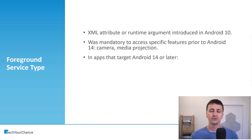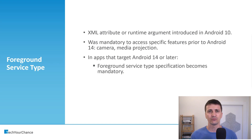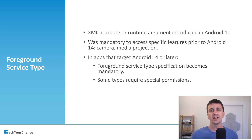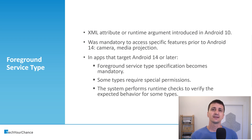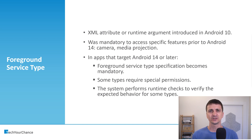In apps that target Android 14 or later, foreground service type becomes mandatory. If you don't specify the foreground service type for your foreground service, the system will throw an exception. Some types require special permissions. Before, you just specified this one single foreground service permission and that was good enough. But now, if you want to use camera in your foreground service, you also need to specify that this service is of type camera and an additional permission. Furthermore, the system performs runtime checks to make sure that foreground services you launch actually adhere to their specific types.